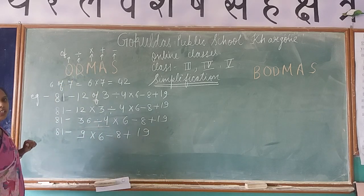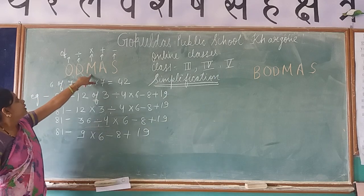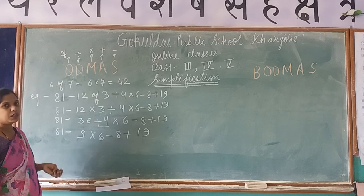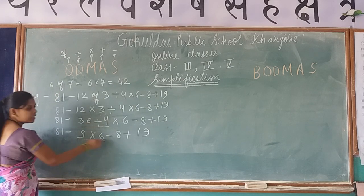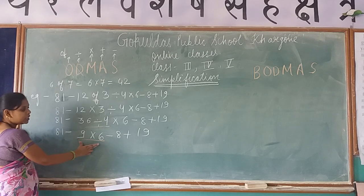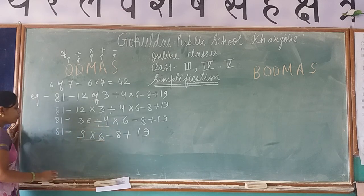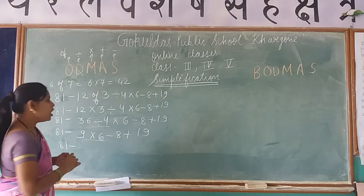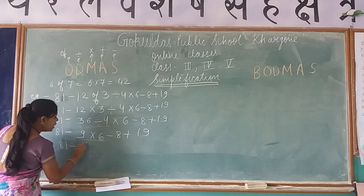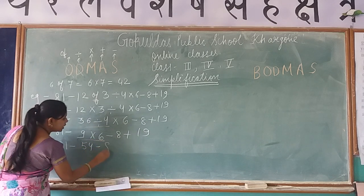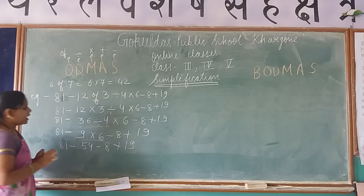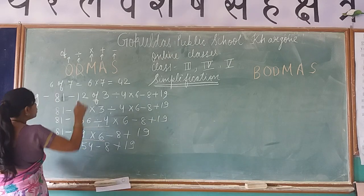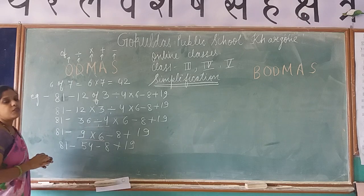Division is done. Our next preference is M, meaning Multiplication. Is there a multiplication sign in this question? Yes. We multiply 9 by 6, which gives 54. So in place of 9 multiplied by 6, we write 54. The question now becomes: 81 minus 54 minus 8 plus 19. There is no more multiplication sign.